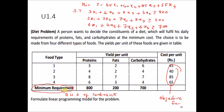If it is a maximization problem, you can see terms like 'maximum requirement.' If you see profit or cost per unit, it should come under the objective function — represented as 45x1, 40x2, 85x3, 65x4. You should not confuse these. Many students will mistakenly write 800x1 plus 200x2 plus 700x3 as the objective function — that is wrong.